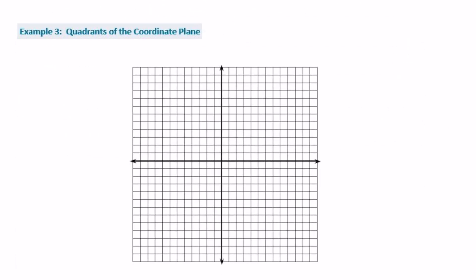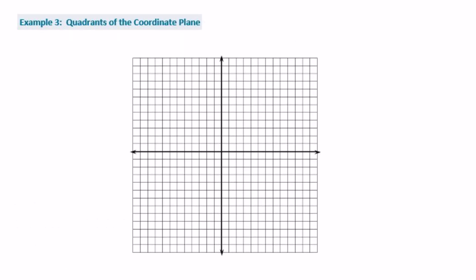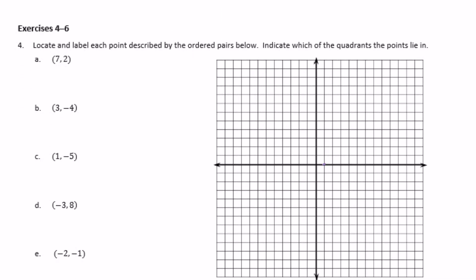Example 3: quadrants of the coordinate plane. There are four quadrants on the coordinate plane. We've mostly been working in quadrant 1, but there is also quadrant 2, quadrant 3, and quadrant 4. They're written in Roman numerals. Let's go to exercises 4 through 6.